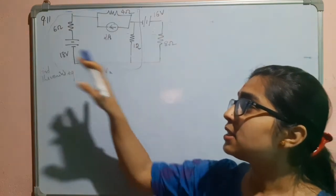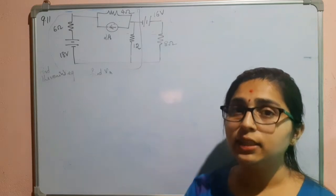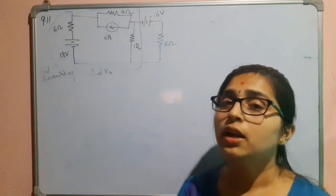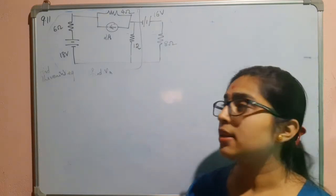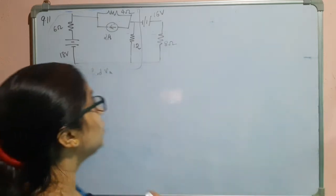Equal to zero means the voltage source will be shorted, current source will be made open. Then only we can find the Thevenin's resistance. So, we will do that.